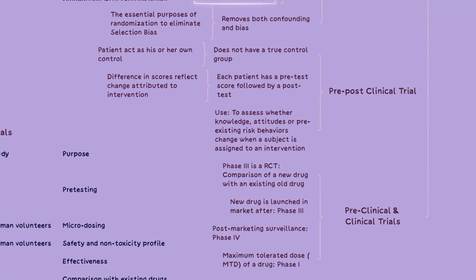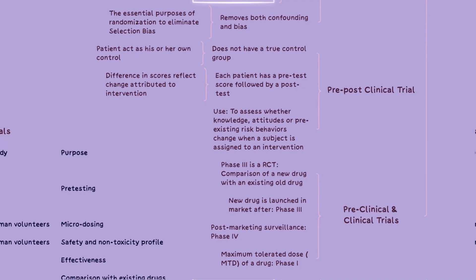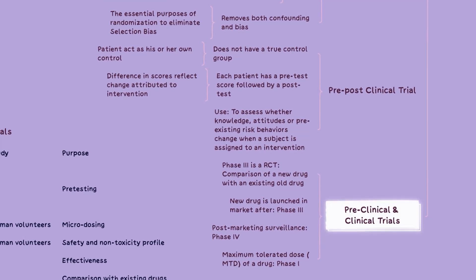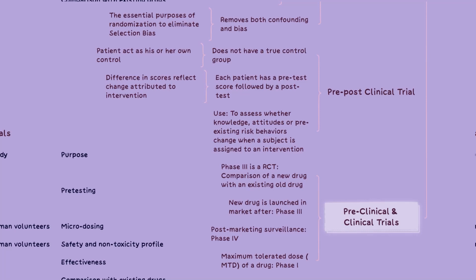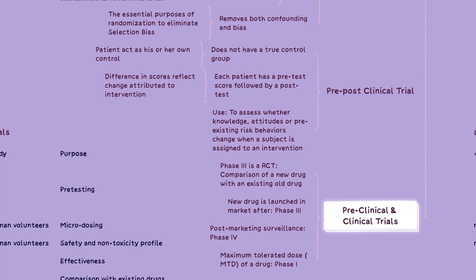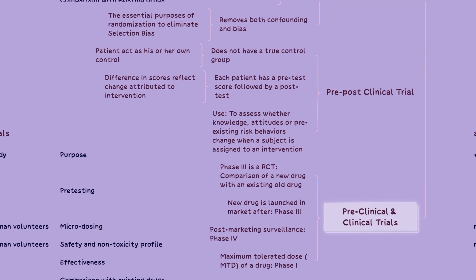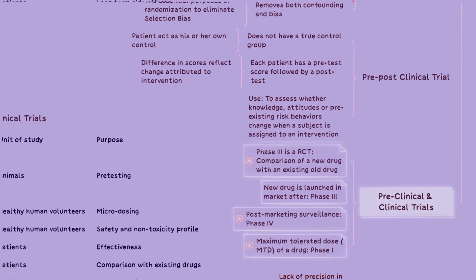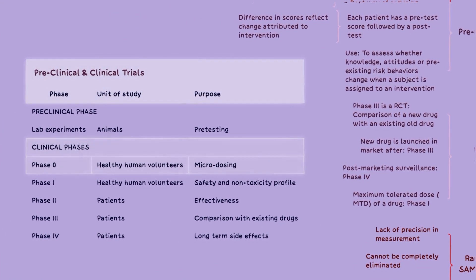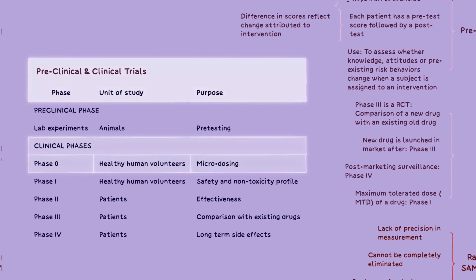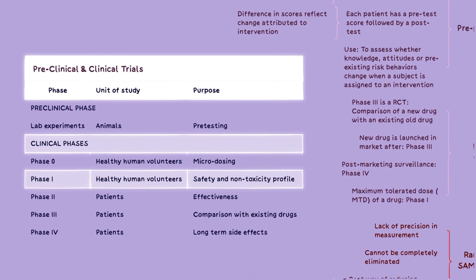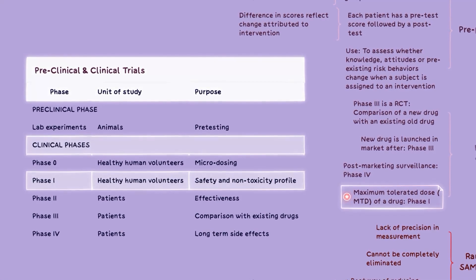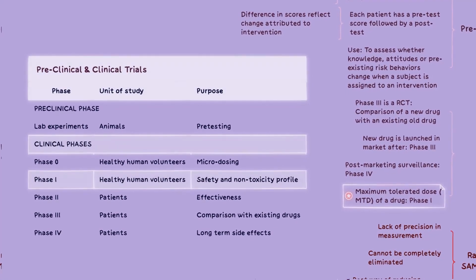There are different types of trials in experimental epidemiology, including pre-clinical and clinical trials. Clinical trials are very important for any exam. Before beginning clinical trials, pre-clinical trials are done to determine initial safety, dosing, and potential effectiveness of the intervention. The clinical phase involves Phase 0, in which the unit of study is healthy human volunteers, and Phase 1, in which healthy human volunteers are studied to determine the safety of the drug and the maximum tolerated dose, or MTD, is determined.